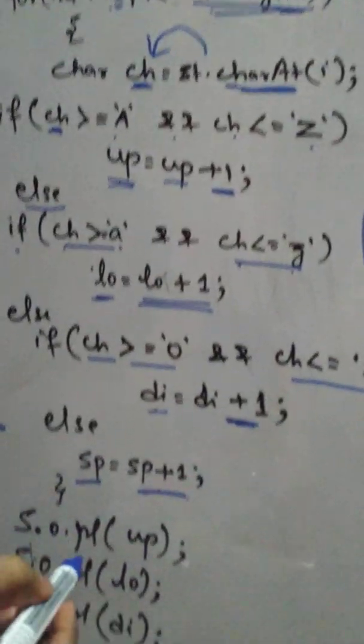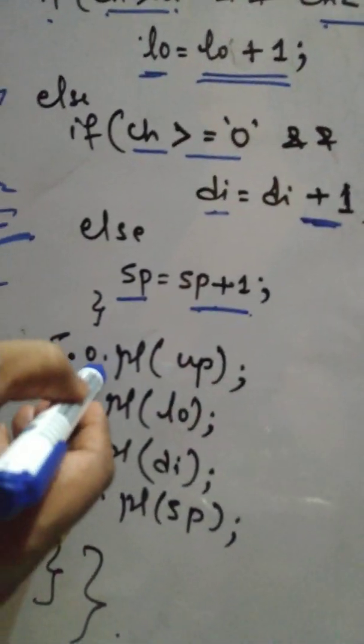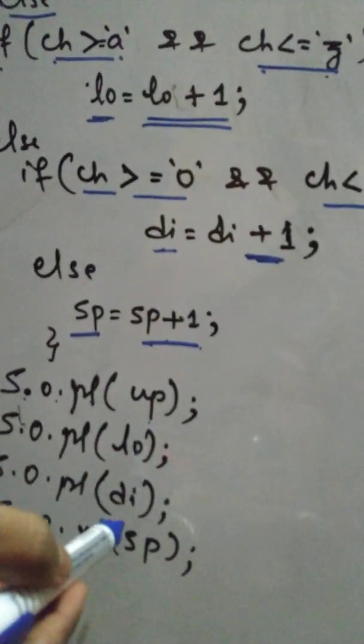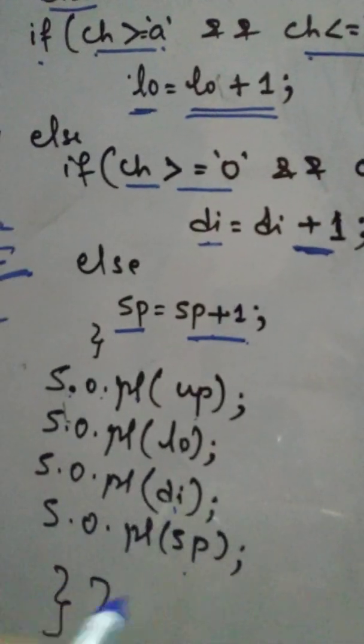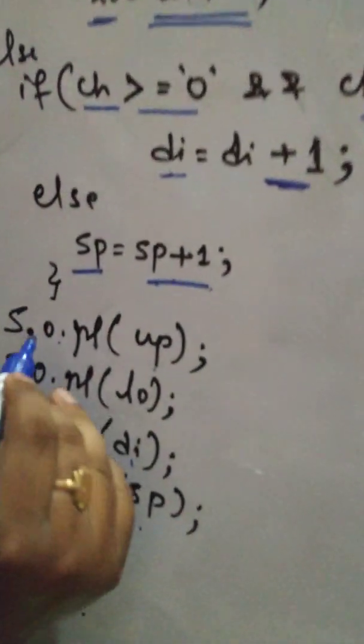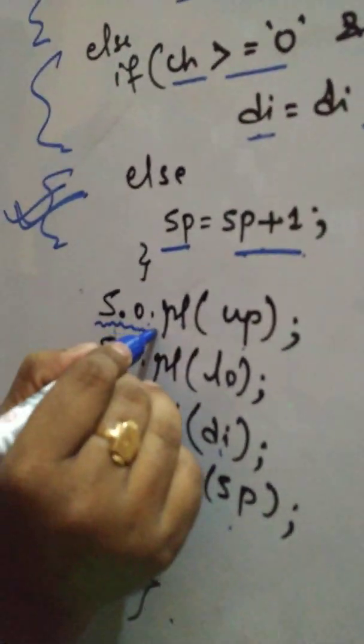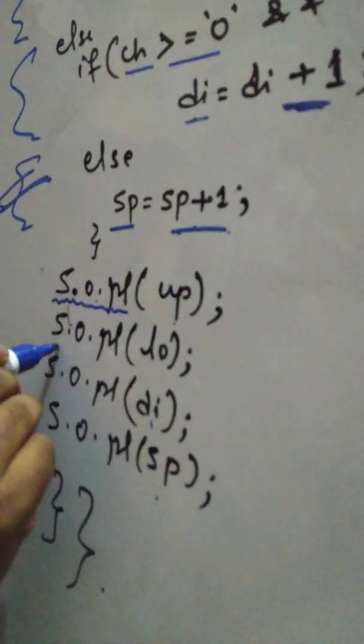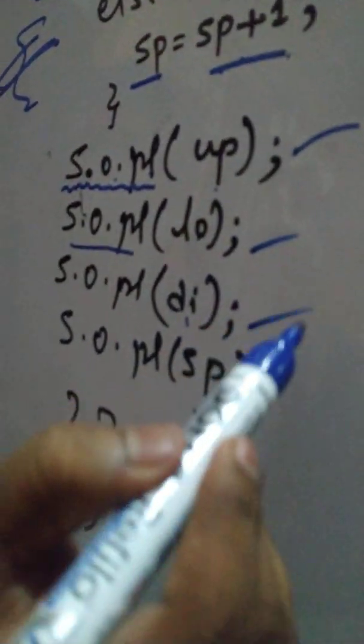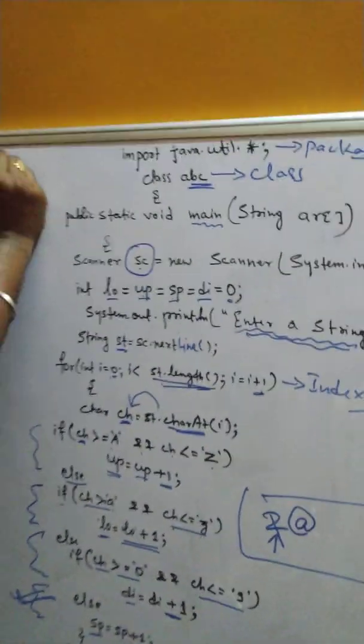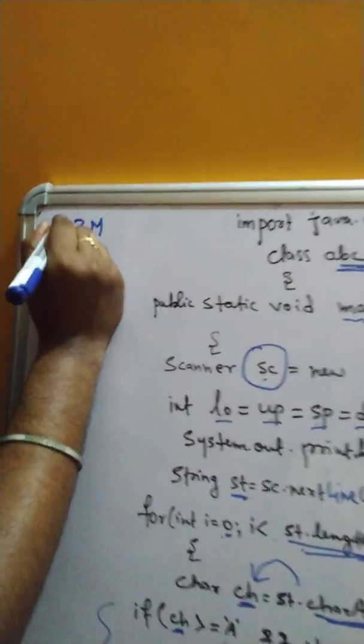So, the output I printed at the last. That is, system.out.println, up for upper case, lo for lower case, di for digits and sp for the special characters. And, one more thing, I use a shortcut here, system.out.println, but don't use, never use this shortcut. So, printing statement UPI printed, LOI printed, DII printed, SPI printed. This programming containing 13 marks in board exam.